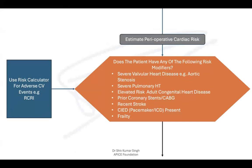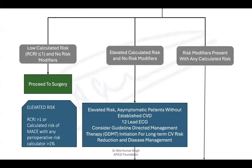Once we have assessed risk modifiers and calculated the risk, we stratify patients accordingly. If the calculated risk is low — RCRI less than or equal to one with no risk modifiers — we can proceed to surgery. Elevated risk is defined as RCRI more than one, or calculated MACE risk of more than one percent with any perioperative risk calculator. If the patient has elevated calculated risk but no risk modifiers — that is, they are asymptomatic without established cardiovascular disease — we obtain a 12-lead ECG and can consider initiating guideline-directed management therapy to reduce long-term cardiovascular risk.